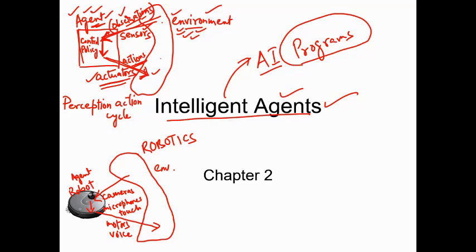In between the sensors and actuators — in between the action and observation — there is a control policy of the agent. Every agent controls itself by what it should sense and what it should do. There is control between these observations and actions, and that is called the agent's control policy.